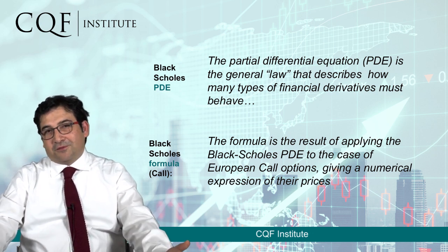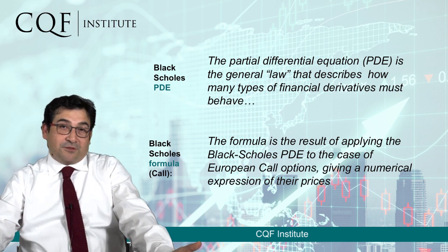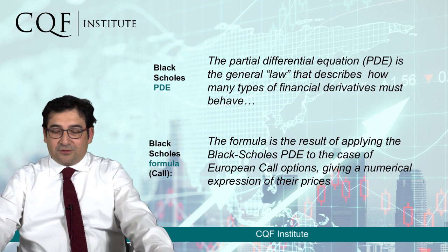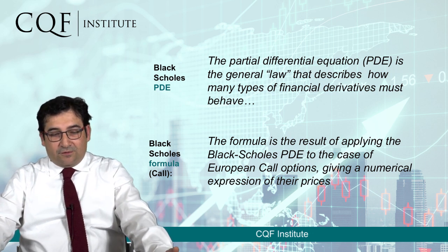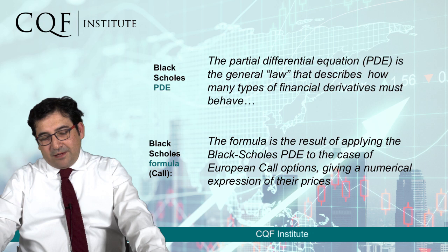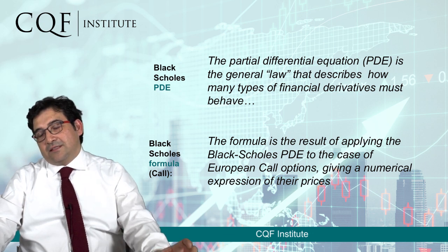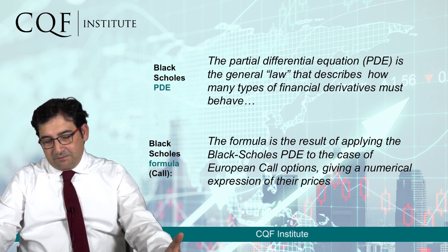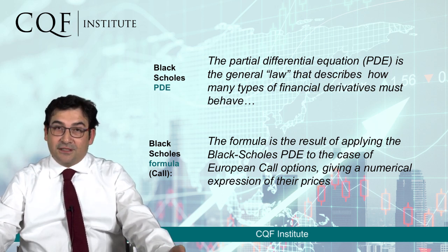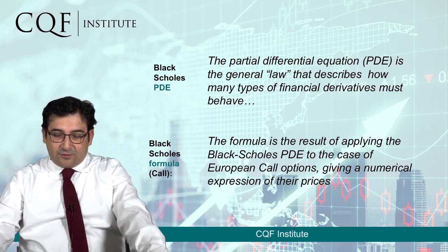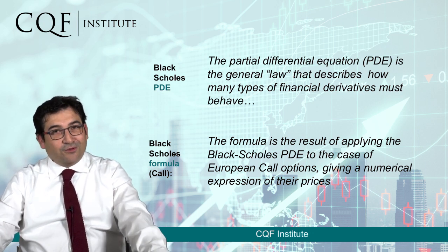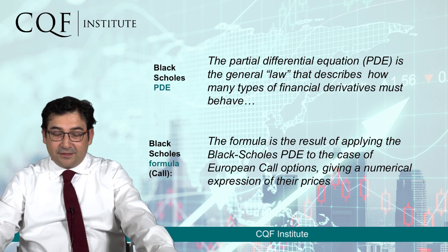It doesn't work for other types of options — it doesn't work for American options, Asian options, Bermudan options, or other types of hybrids. Indeed, the Black-Scholes formula is the main tool we use to interpret prices observed in the market, and that's why it is useful every day. It's like our hammer that we use all the time in quantitative finance.